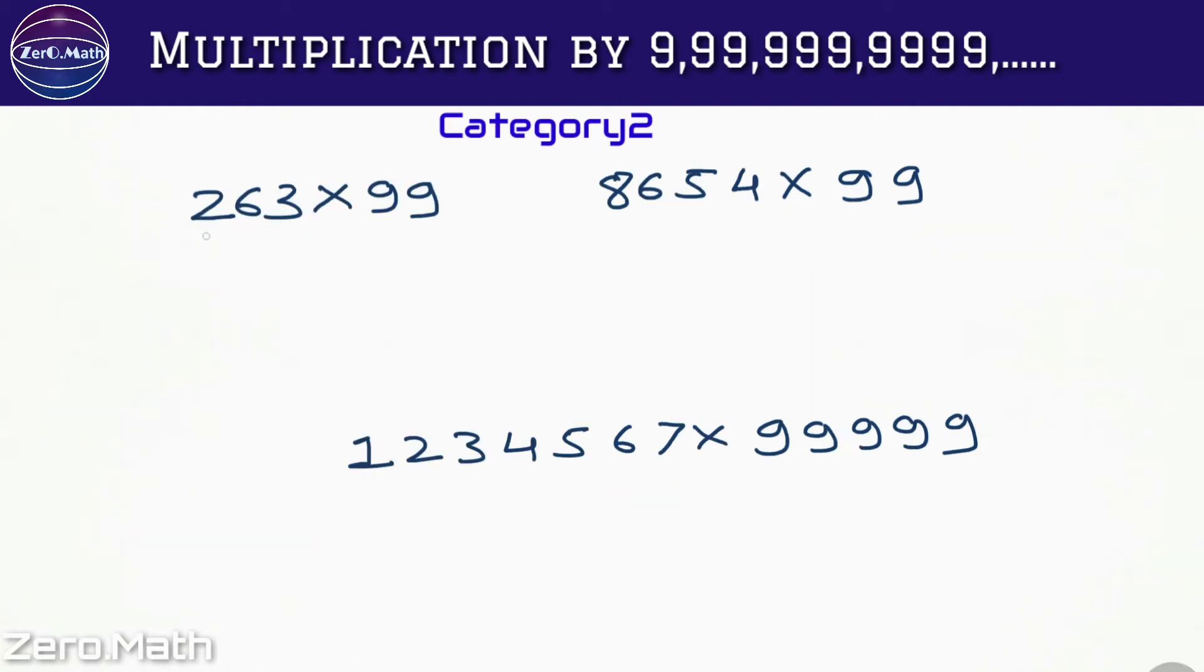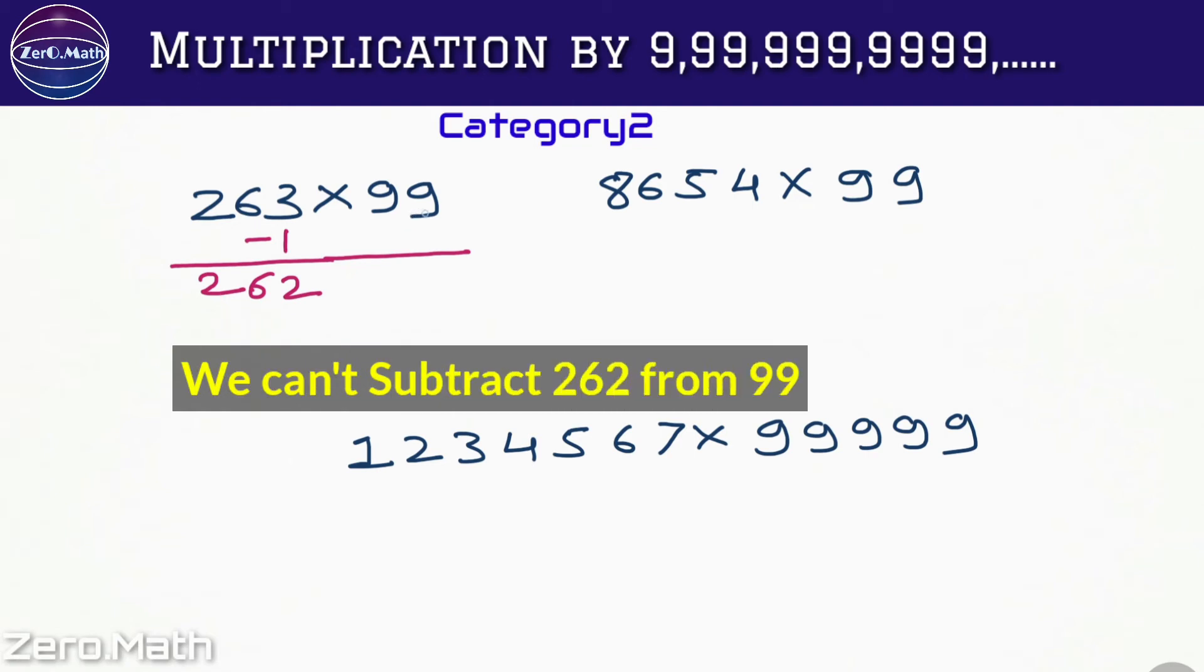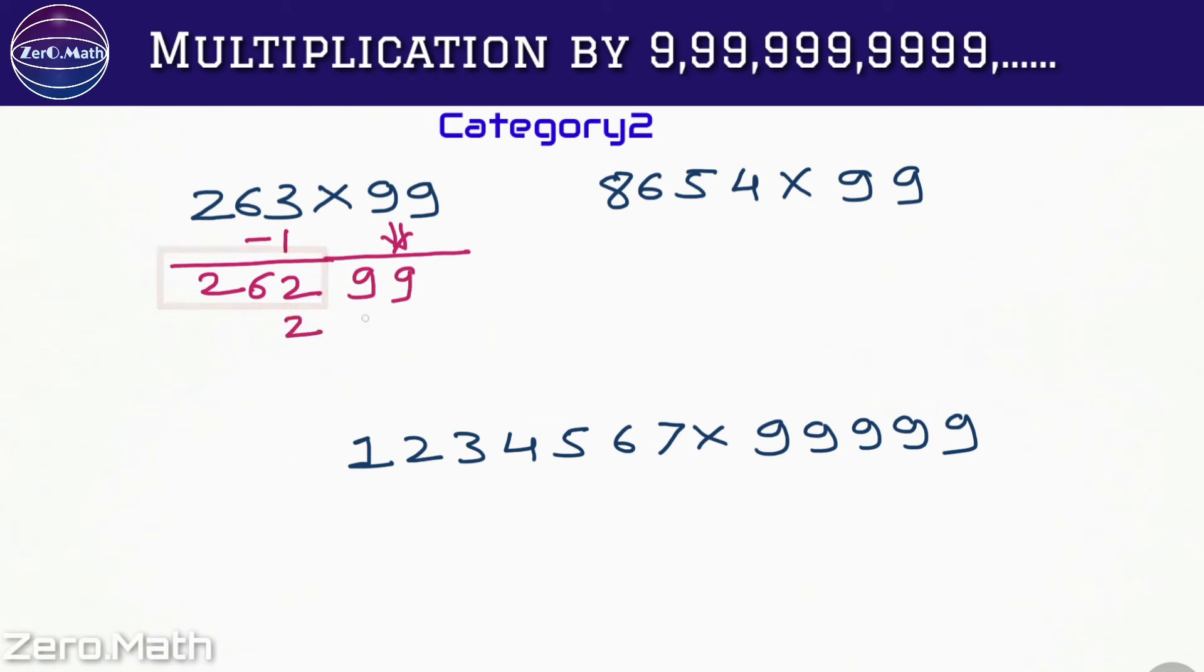Let's take some examples from Category 2, where the number of digits in the number which we are multiplying are more than number of digits in the 9 series number. So let's multiply 263 into 99. The first step, we're going to subtract 1 from this 263 so that we will get 262. In the next step you can see this 262 we cannot subtract from 99. So what I'm going to do, I'm going to take this 99 as it is down and then I'm going to subtract 262 from it.